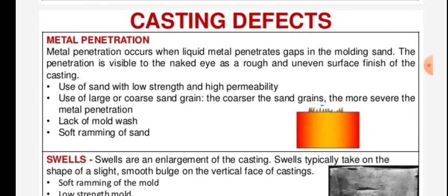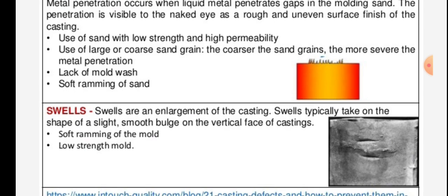Metal penetration occurs when liquid metal penetrates gaps in the molding sand. The penetration is visible to the naked eye as a rough and uneven surface finish on the casting. Causes include use of sand with low strength and high permeability, use of large or coarse sand grains — the coarser the sand grains, the more severe the metal penetration — lack of mold wash, and soft ramming of sand.